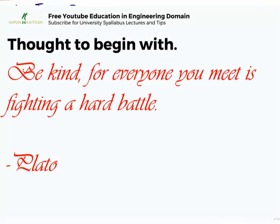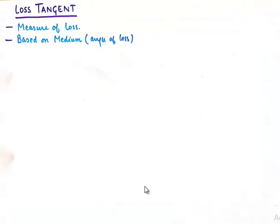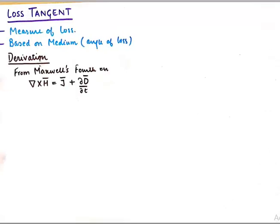By the definition of loss tangent it is the measure of loss and is based on the properties of the medium and it is depicted by tan theta. When we do the derivation of this loss tangent we find that it's the ratio of the lossy part to the lossless part of the propagation.